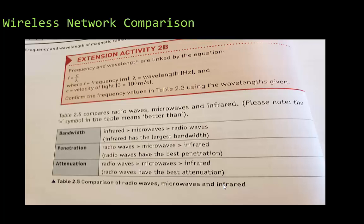Comparing wireless types from the Cambridge textbook: infrared has the highest bandwidth, followed by microwaves, then radio waves. For penetration, radio waves have the best penetration and infrared has the worst. For attenuation, radio waves have the best and infrared has the worst. That's a quick comparison chart useful for studying for the upcoming exam.